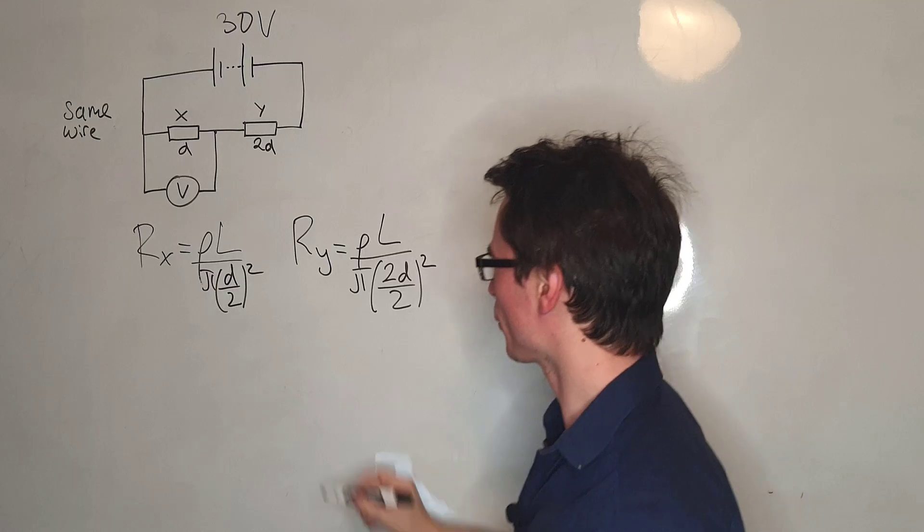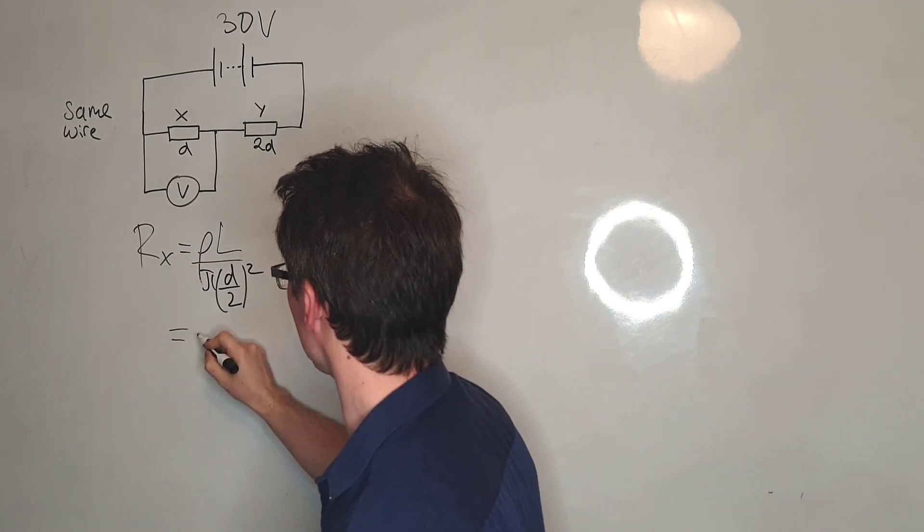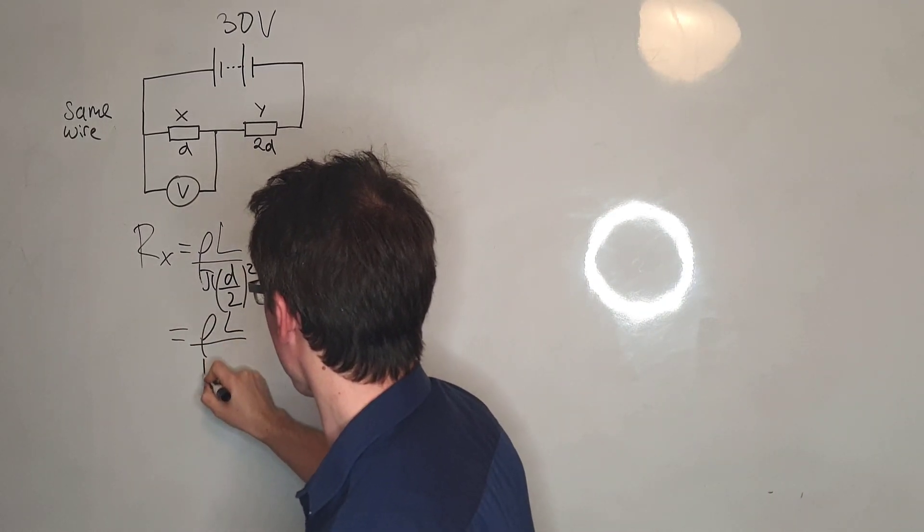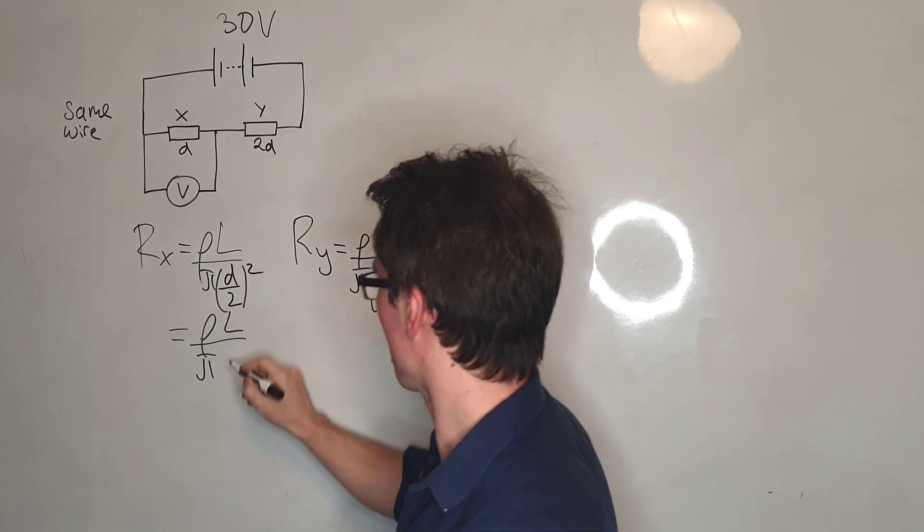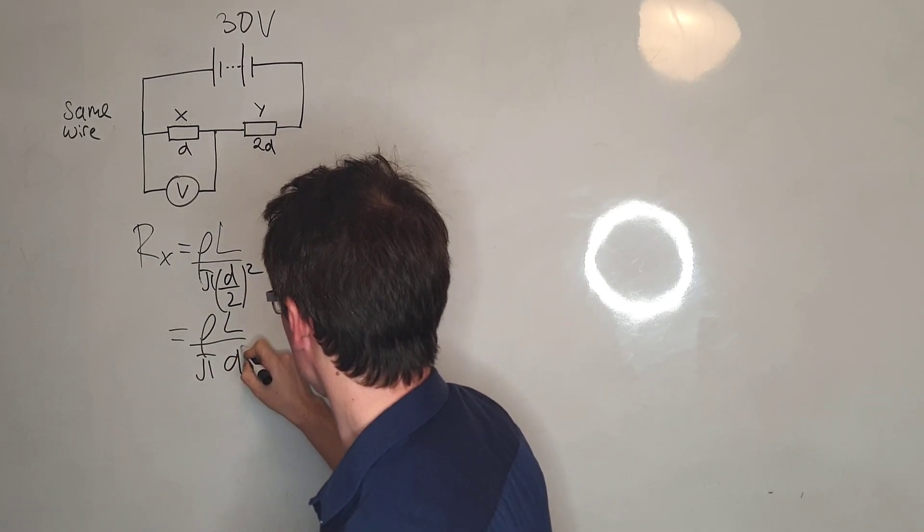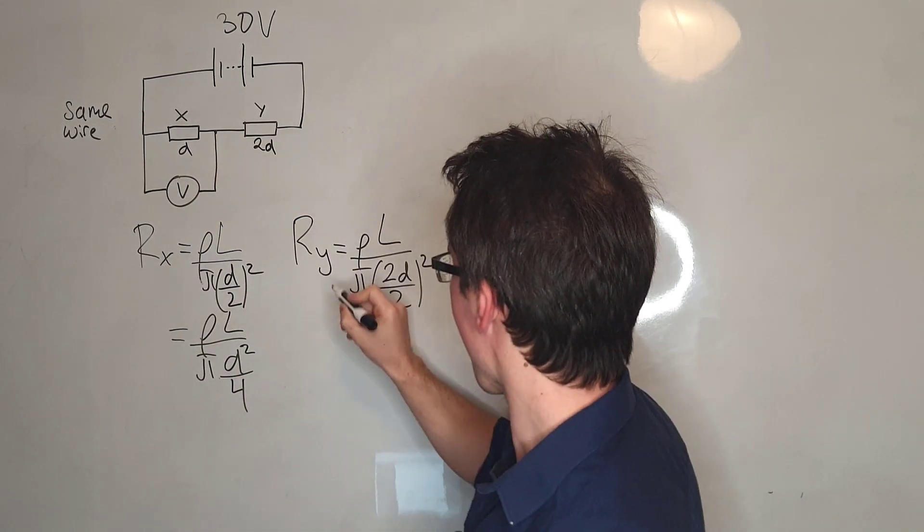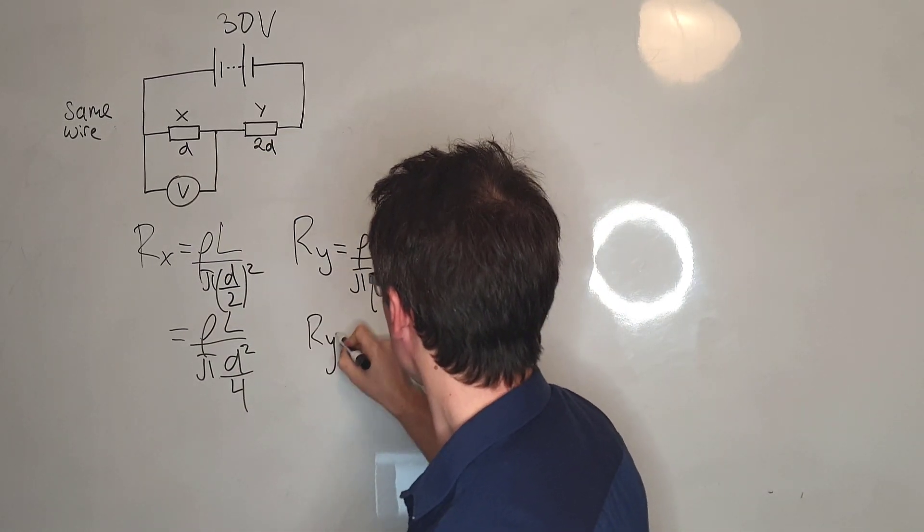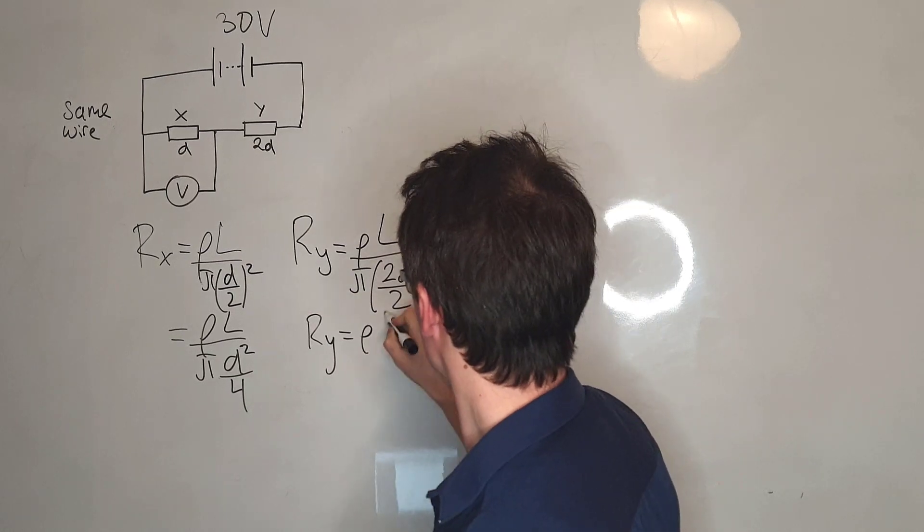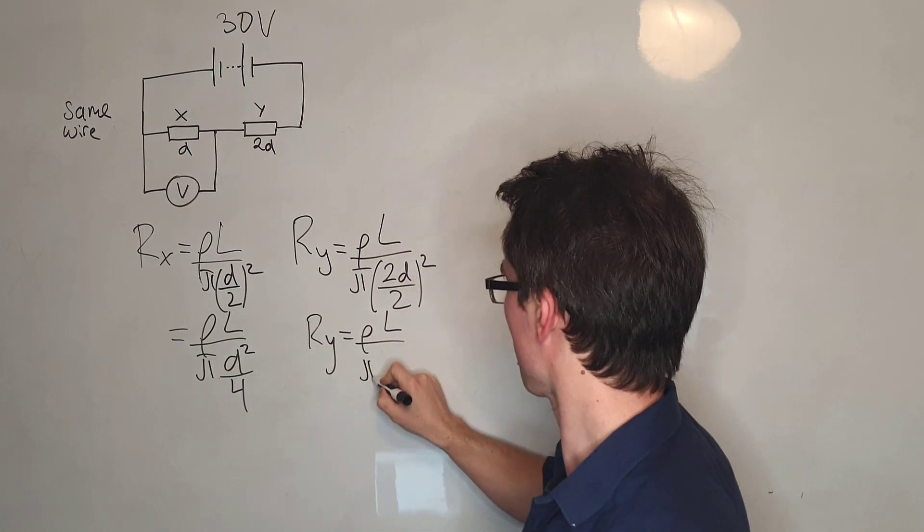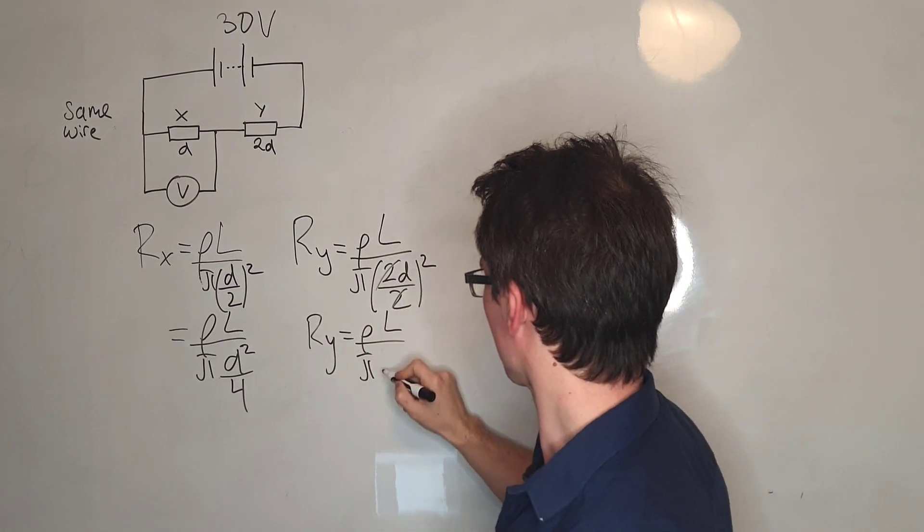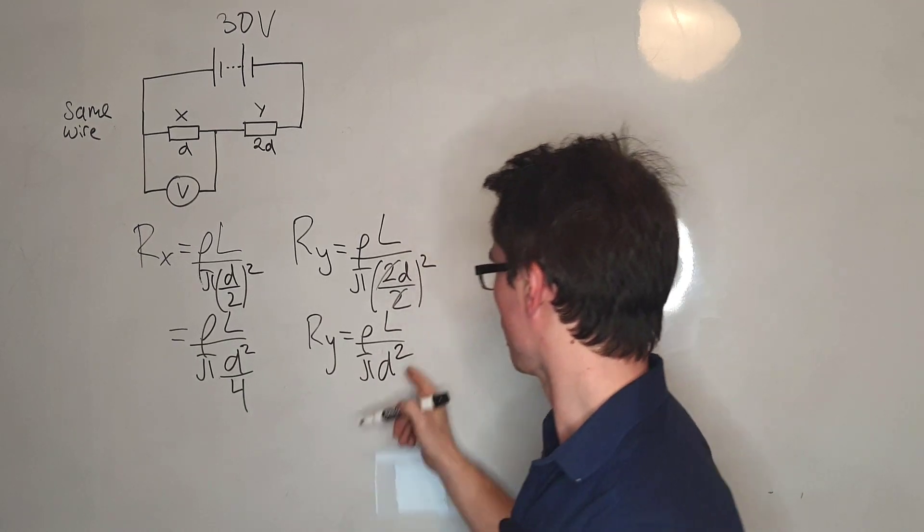Let's compare those two and expand those brackets. So this is equal to ρL over π. Now, this will give me D squared over 4, and Ry will be giving me ρL divided by π. Those two are going to cancel and then we're going to have D squared.